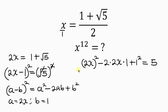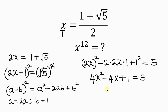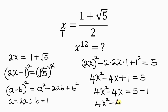Simplifying the left-hand side: 2 squared is 4, so we get 4x squared, minus 2 times 2x times 1 gives 4x, and then plus 1 squared is 1, equal to 5. Our next step is to move 1 to the right-hand side, giving 4x squared minus 4x equal to 5 minus 1, which simplifies to 4x squared minus 4x equal to 4.